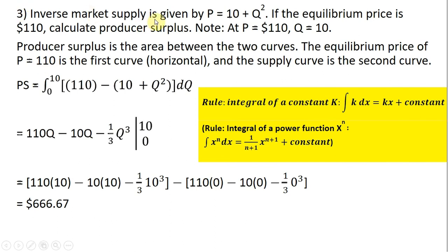We have an inverse market supply given by P equals 10 plus Q squared, and the equilibrium price is $110. We want to calculate producer surplus. If P is 110 and we plug that into the equation and solve for Q, we get Q equals 10. That's where Q equals 10 is coming from — by plugging 110 into this inverse supply curve.